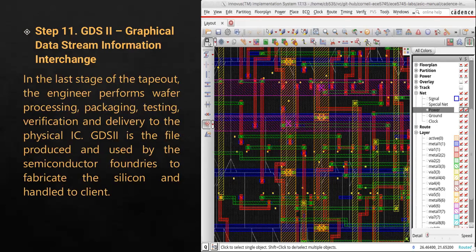This is the final GDSII information interchange file. This file is usually done with EDA tools, mainly Cadence. This final file is sent to the fab labs or semiconductor manufacturing companies before they finally produce the chip and give it to the customer.